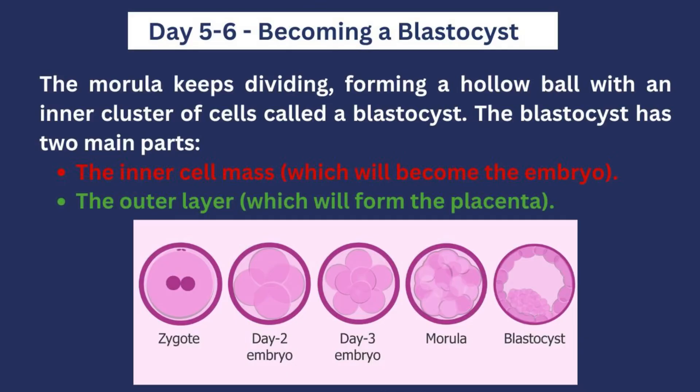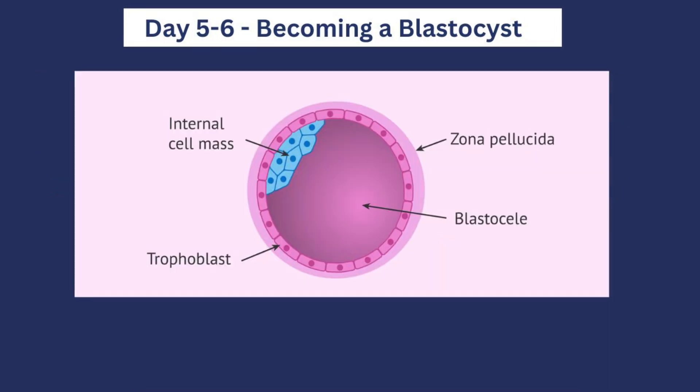After the morula has been formed, the division process is not complete. By the end of day six, the division would have produced a blastocyst. The difference between a blastocyst and a morula is that while a morula is 16 identical cells all clustered together, a blastocyst has many more cells in a hollow ball formation — it has an outer side and an inner side. The inner side goes on to form the embryo, which will eventually become the baby, while the outer layer forms the placenta — the organ attached to the uterus that helps transmit nutrients from the mother to the baby.